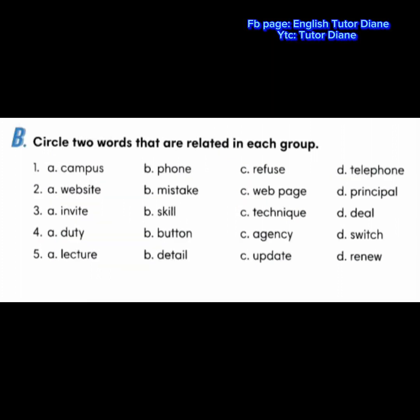In this part, we're going to circle two words that are related in each group. You're going to make a guess. Number 1: correct answers are B, phone and D, telephone. Number 2: correct answers are A, website and C, webpage. Number 3: correct answers are B, skill and C, technique. Number 4: correct answers are B, button and D, switch. Number 5: correct answers are C, update and D, renew.